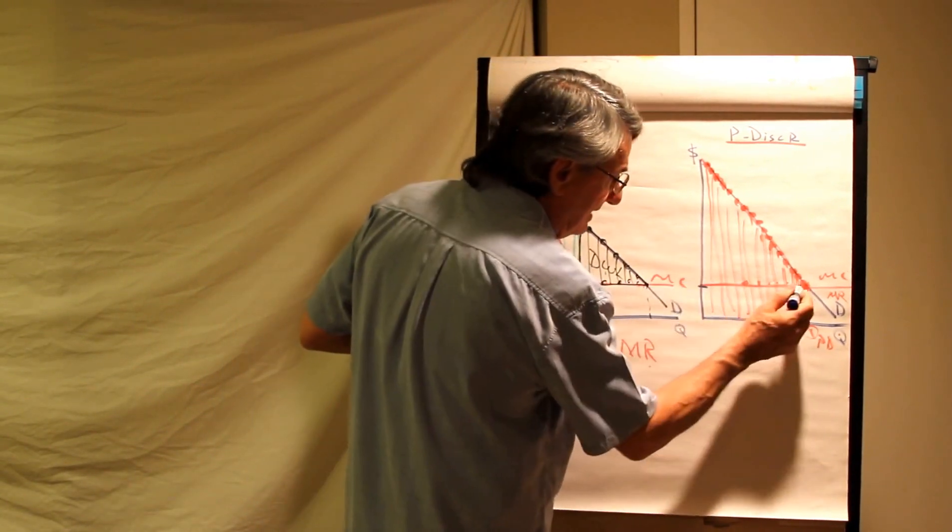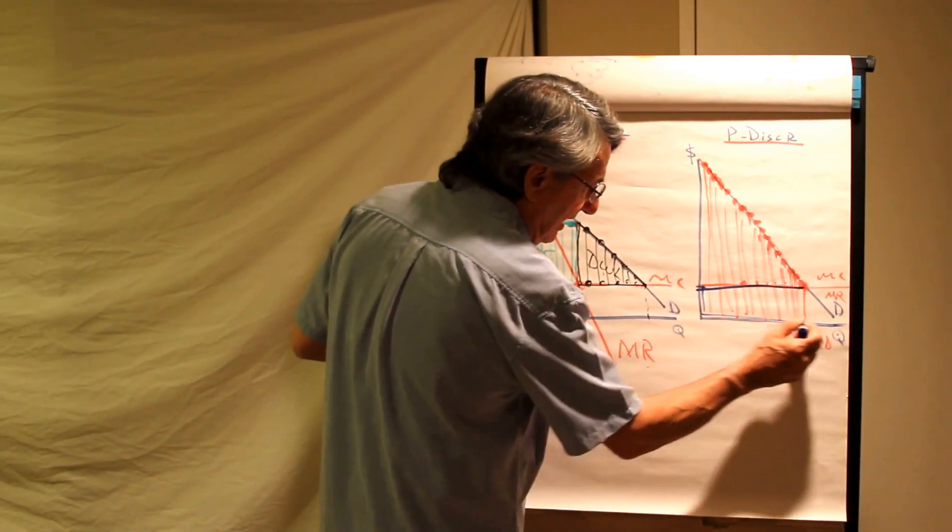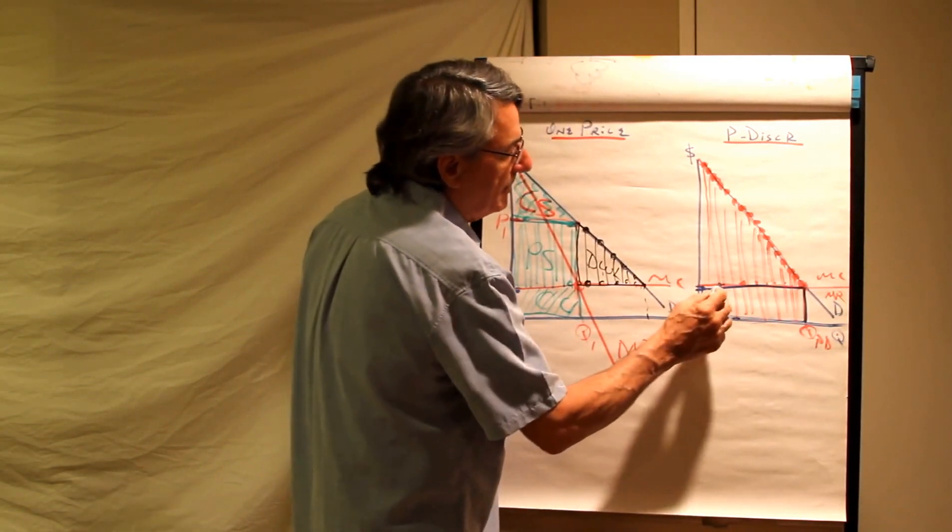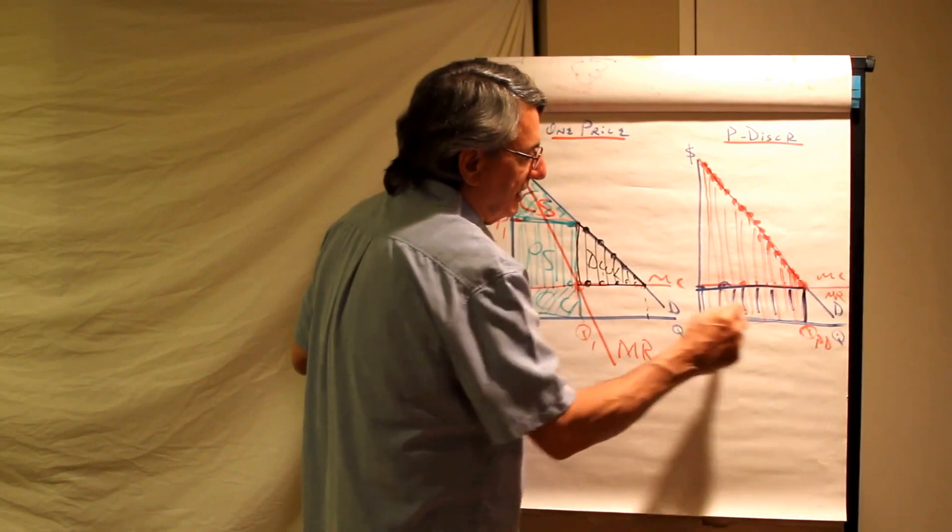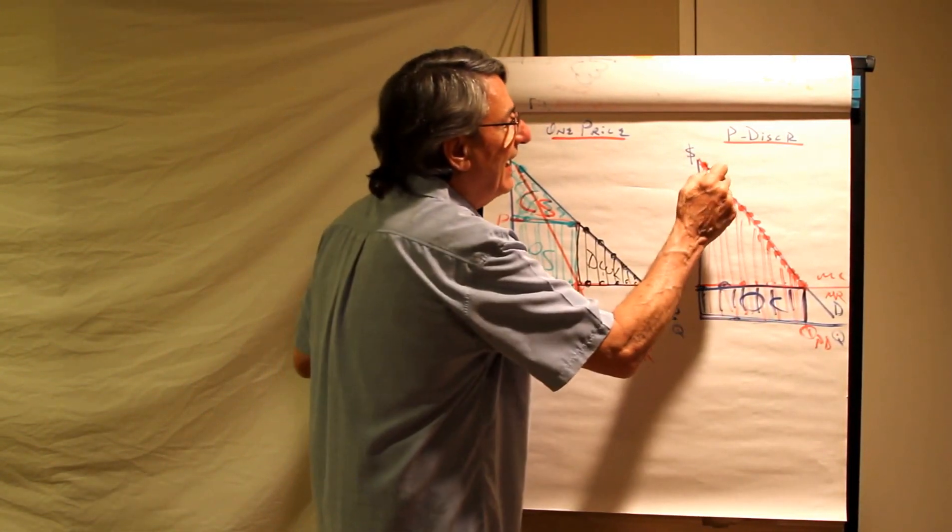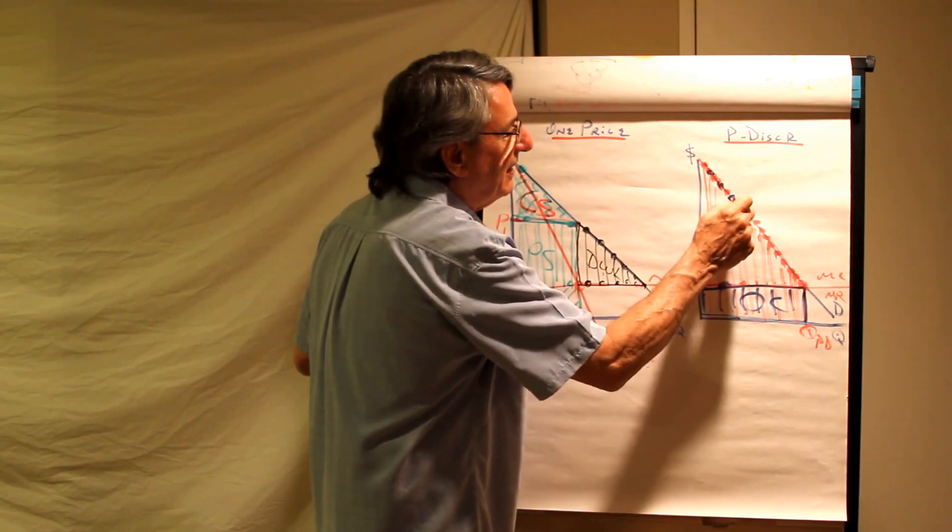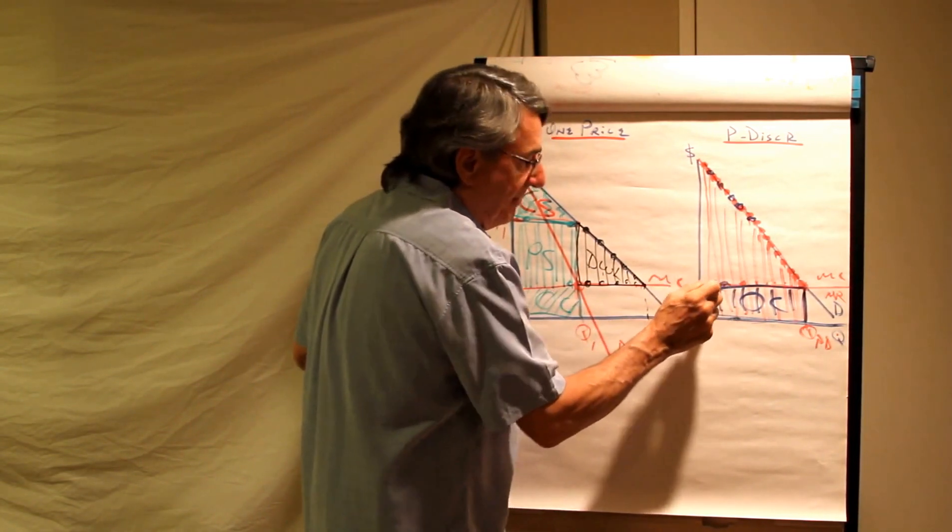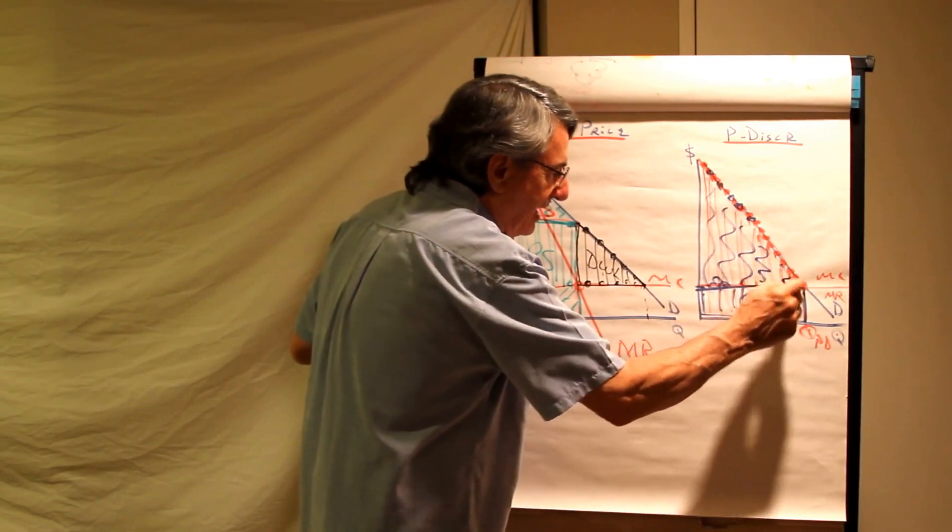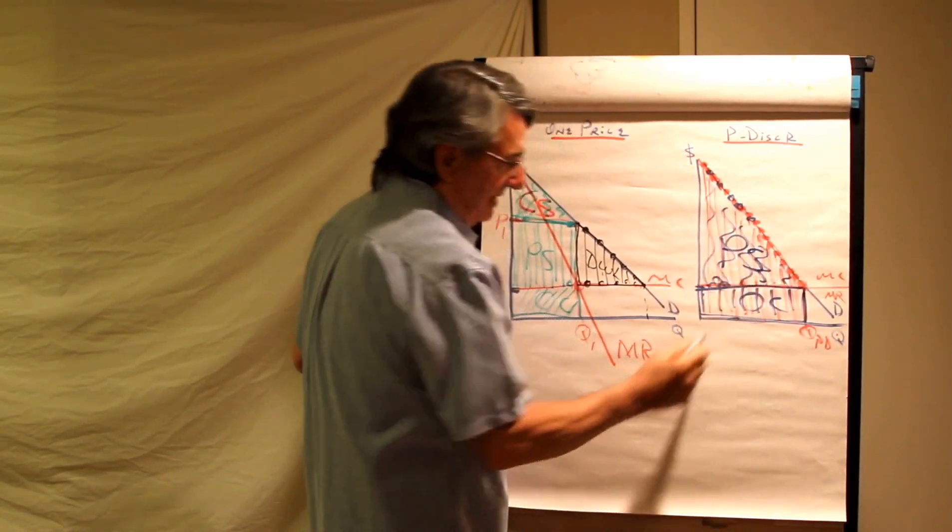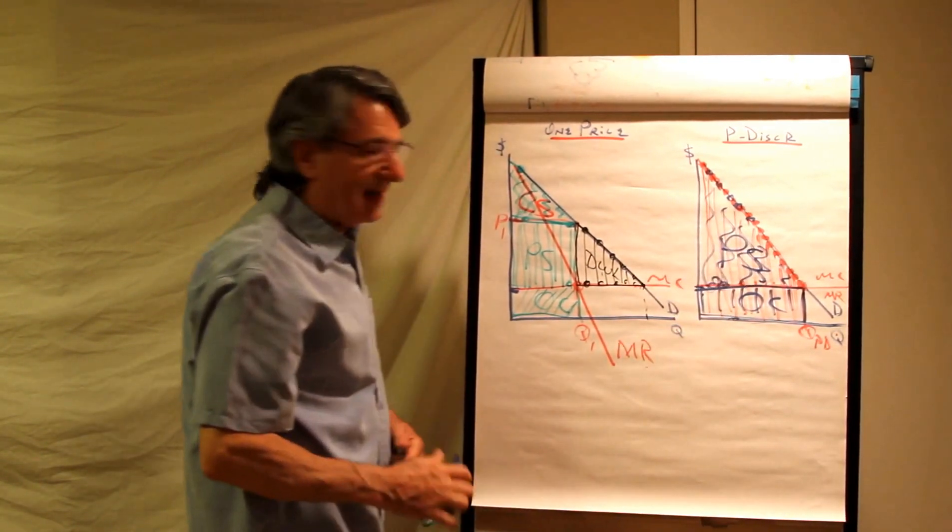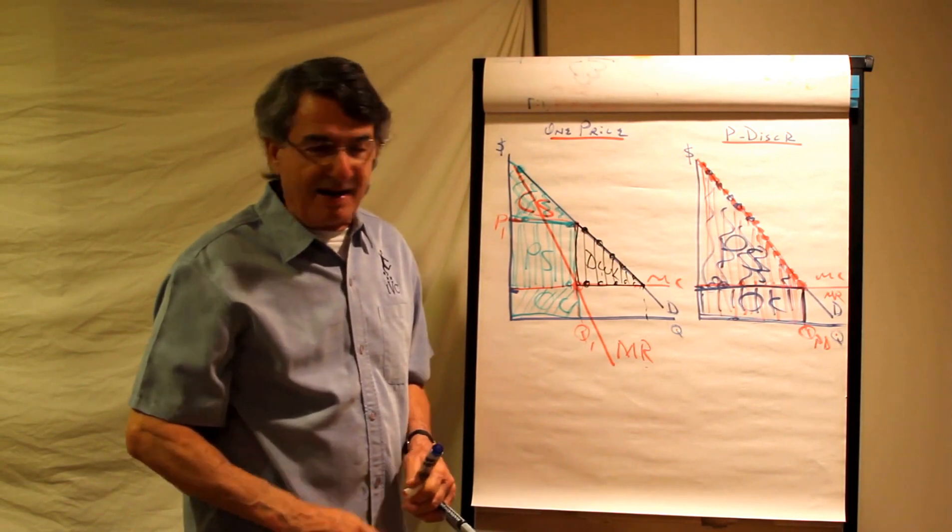And this area right here is the opportunity cost of producing each of these units. So the area of opportunity cost is that. And then all of the area beneath price but above opportunity cost represents this firm's producer surplus. So we have producer surplus that area, opportunity cost that area, and what is missing here?